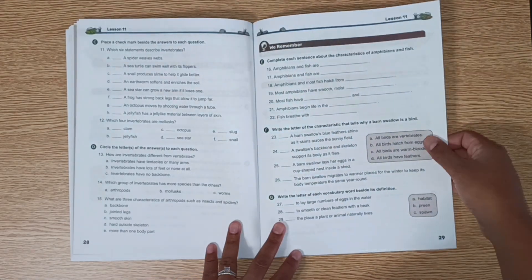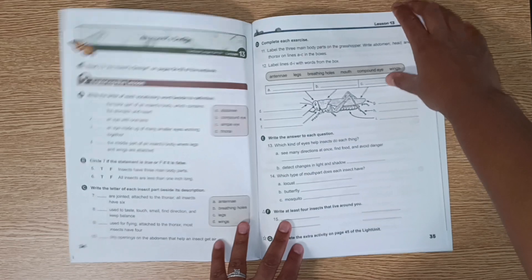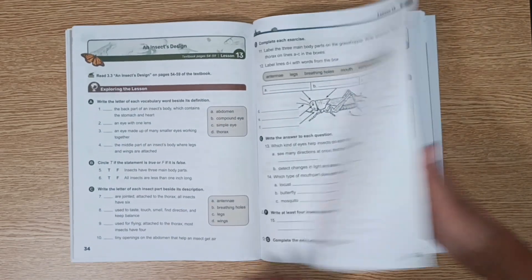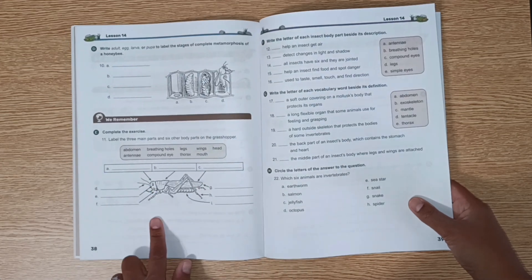Invertebrates, arthropods, and insects, metamorphosis. A lot of labeling.